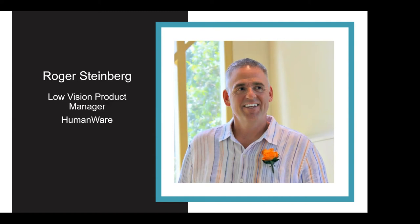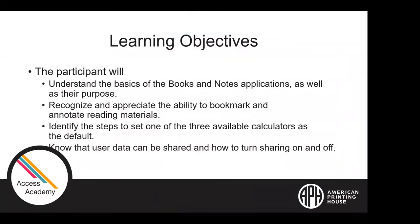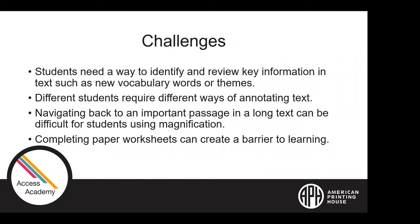Let's get into our learning objectives. We're going to understand the basics of the books and notes applications — what do they do and how do you use them. We'll recognize the ability to bookmark and annotate reading materials, identify the steps to set one of the three available calculators as the default, and know that user data can be shared and how to turn sharing on and off. Students need ways to identify key information in text like vocabulary words or themes, and different students require different ways for annotating text. Navigating back to an important passage in a long text can be difficult for students using magnification, and completing paper worksheets can create a barrier to learning.